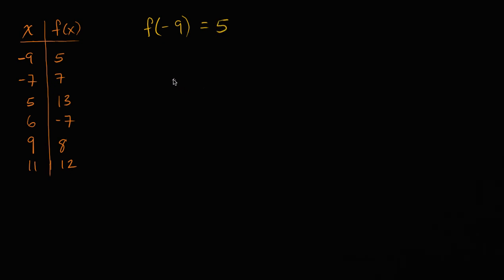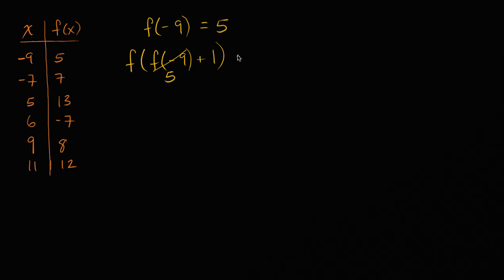You might already have experience with doing composite functions, where you say f of negative nine plus one. So this seems very daunting, but we know what f of negative nine is — this is going to be five — so it's going to be f of five plus one, which equals f of six. And if we look at our table, f of six is equal to negative seven.